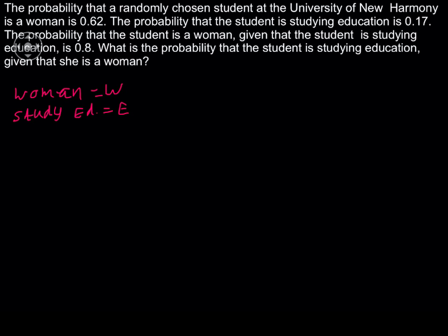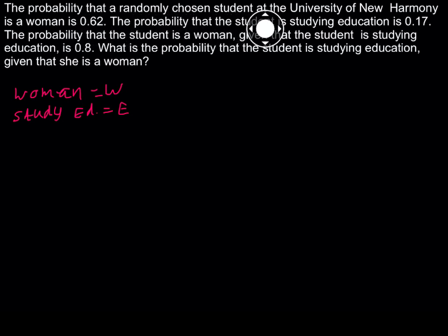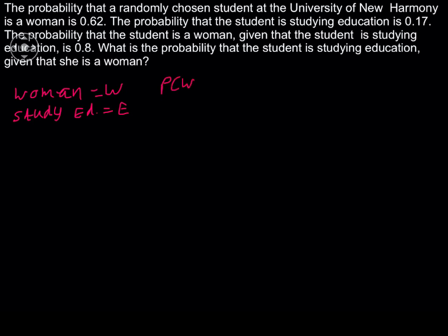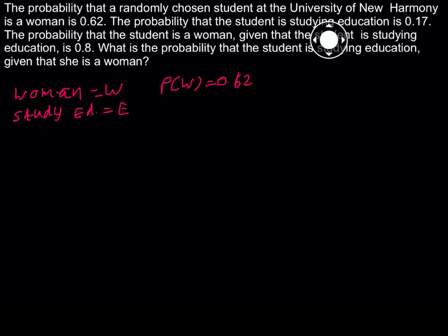Now read the problem again. We have: probability that a randomly chosen student at the University of New Harmony is a woman is 0.62. That means probability of woman student equals 0.62. The probability the student is studying education is 0.17, therefore probability of E equals 0.17.